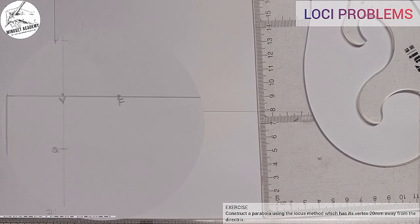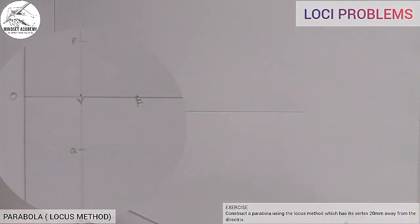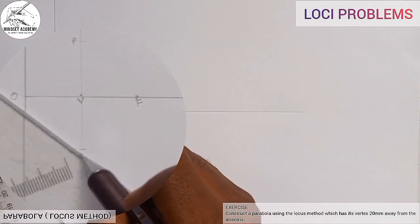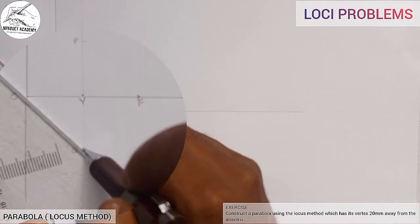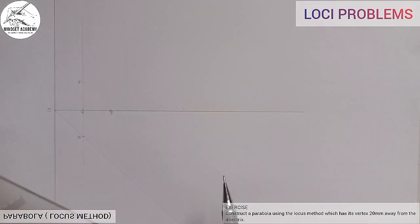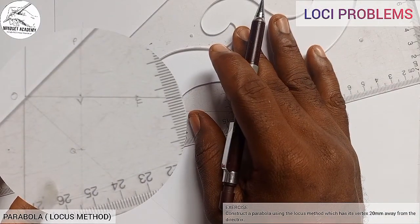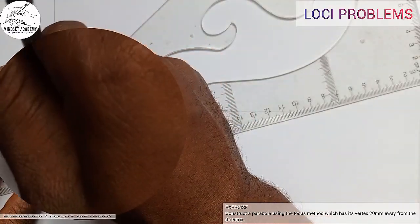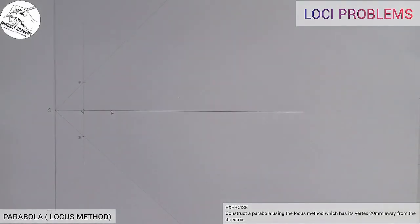So I will draw a line from O to pass through Q. This way. I will draw a line from point O to pass through Q. You can see that.